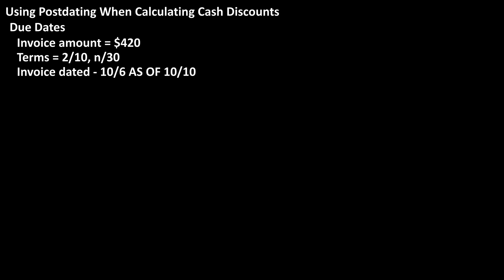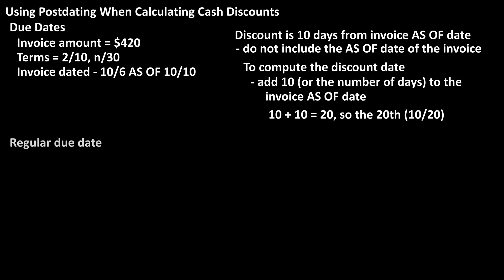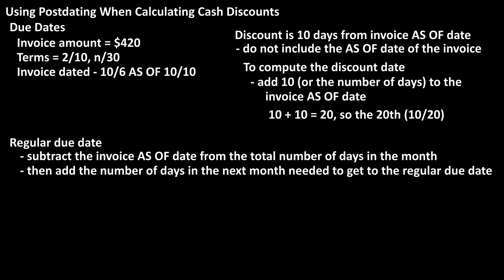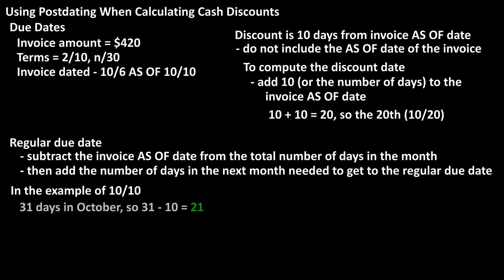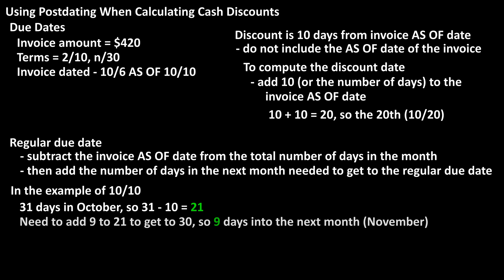Now for the due date of 30 days from the as of date. To calculate this, we subtract the as of date from the number of days in the month, then add the number of days in the next month needed to get to 30, or the regular due date of the invoice. Using our example of 10-10, there are 31 days in October, so we have 31 minus 10, which equals 21. To get to 30, we need to add 9 to 21, so 9 days in the next month of November, and the due date for 30 days from 10-10 is 11-9, November 9th.